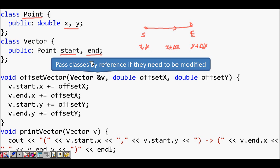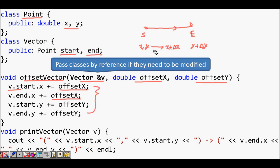To do this using a function, we write a function offset_vector. We want to change the data members of class Vector — that is, change the coordinates of the points — so we pass a reference to the vector: vector& V. Then V.start.X = V.start.X + offsetX, and V.end.X = V.end.X + offsetX. This transformation is brought about by offset_vector, passing by reference since we are modifying the object.